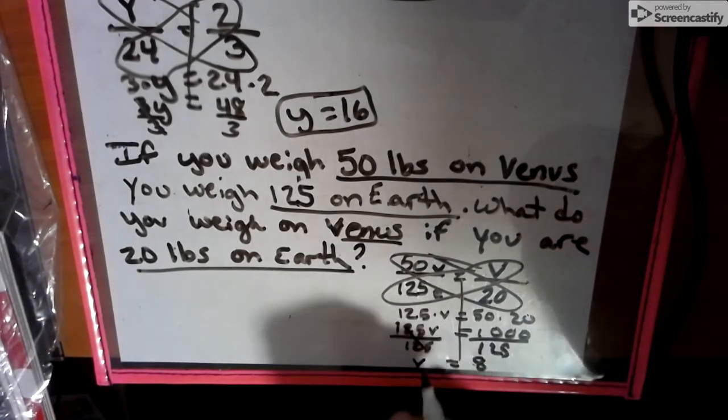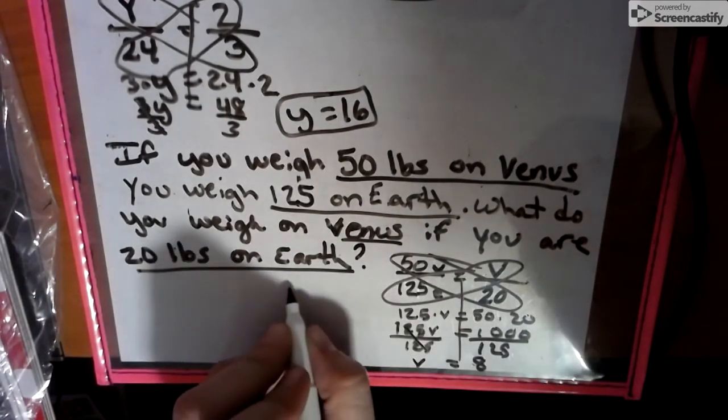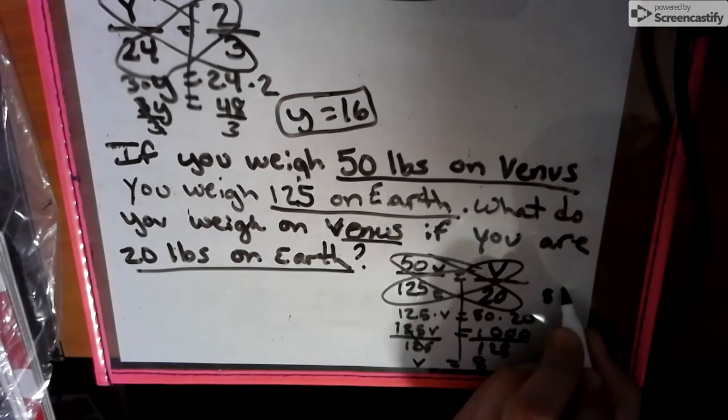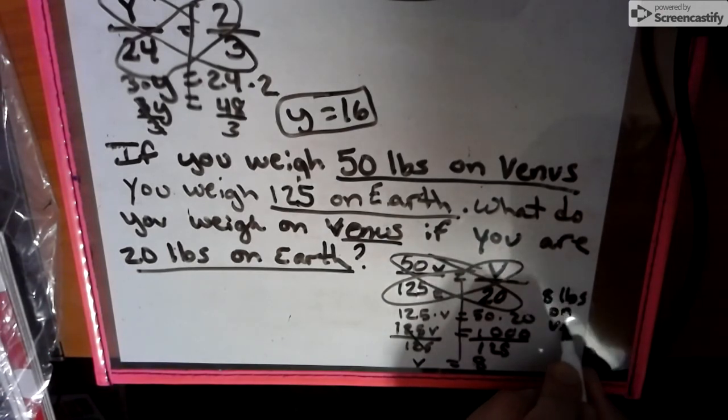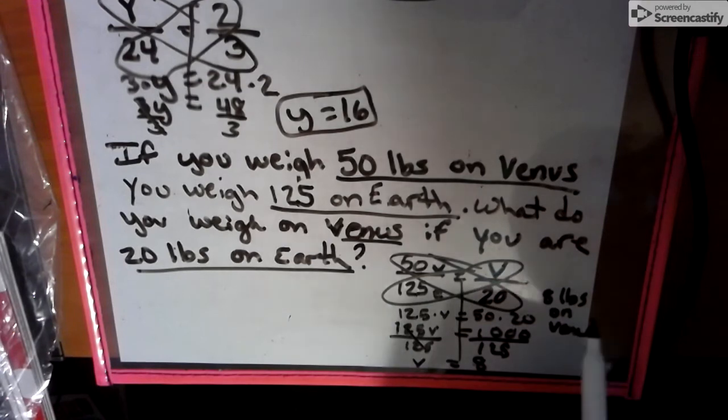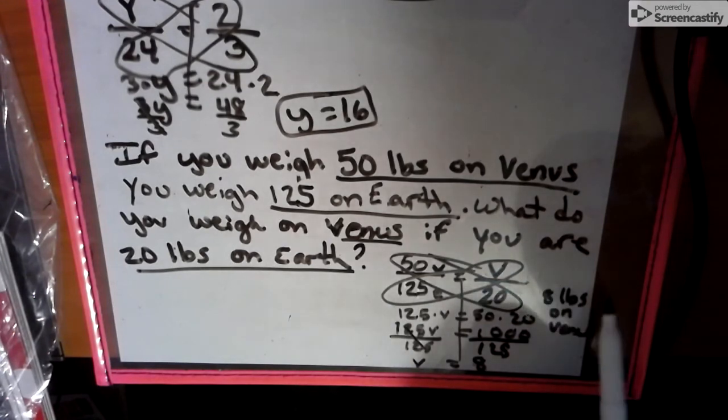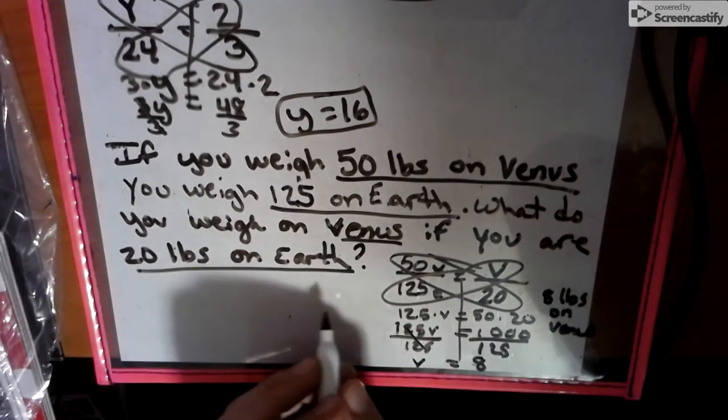So we have V equals 8. That means they will weigh 8 pounds on Venus. Okay. 8 pounds on Venus. Now, if some of you are looking going, what does this mean? LBS. That's the abbreviation for pounds. Now, I want you just to take a look at this.